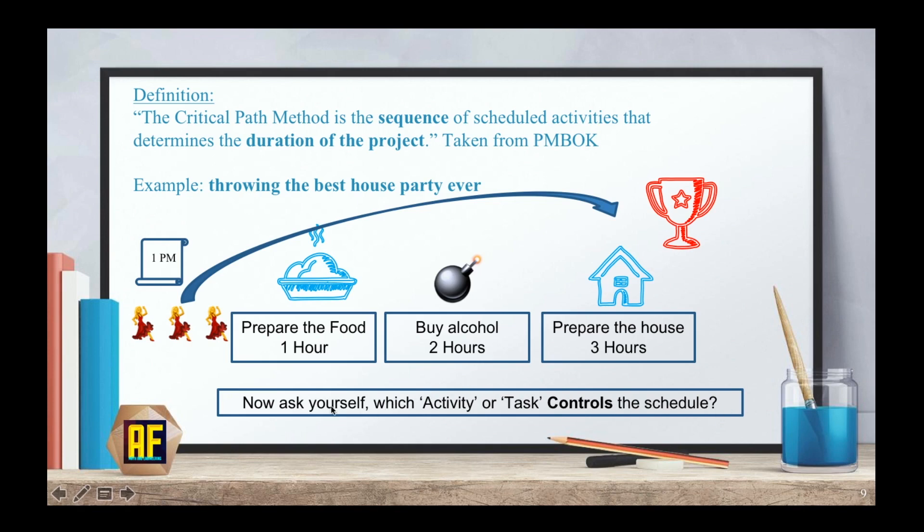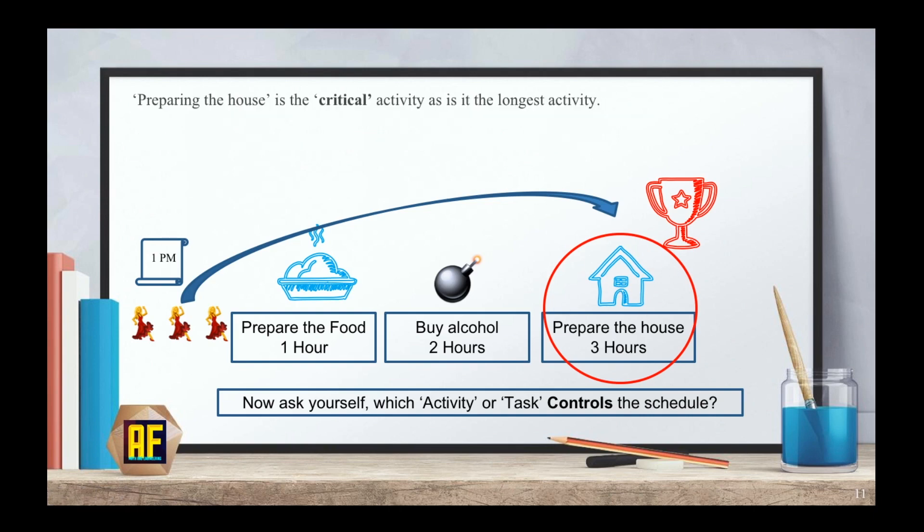Each task takes 1 hour, 2 hours, and 3 hours. These are called activities or tasks. Each lady will take care of a different task, and altogether, they will finish preparing for the party in 3 hours. Now, ask yourself, which activity or task controls the schedule?